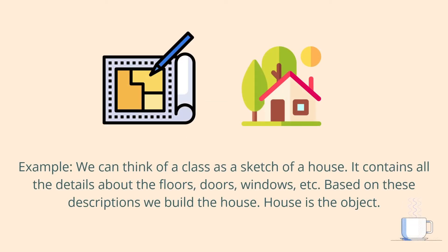Now let's see class and object with an example. Think of a class as a sketch of a house. The house contains all the details about the floor, door, and windows, and based on this description we build the actual house. Here, the house is the object and the sketch is the class.